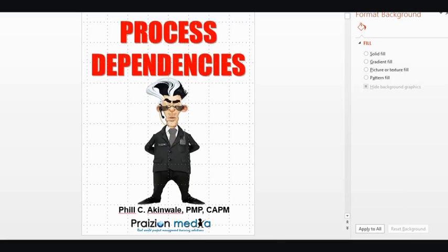Today we're going to be talking about process dependencies. This is similar to dependencies talked about in Chapter 6 of the PMBOK Guide, but it has a focus on project processes, so I call it process dependencies. As you know in Chapter 6, if task B is dependent on A, it means you have to get something from A before B can be done. You could have a task dependent on four other processes. There are a lot of processes in the PMBOK Guide, but you need to be aware of the dependencies.